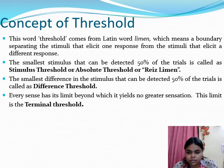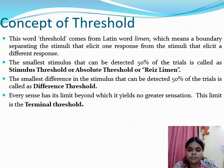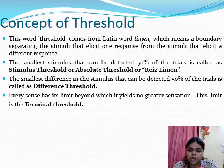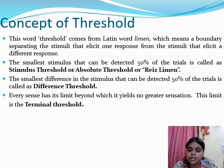The second is the difference threshold, or difference limen — the smallest difference that the subject can detect 50% of the time. The third is the terminal threshold: every sense has its limit beyond which it does not yield any sensation. There is a point beyond which no sensation is felt at all — that is the terminal threshold.